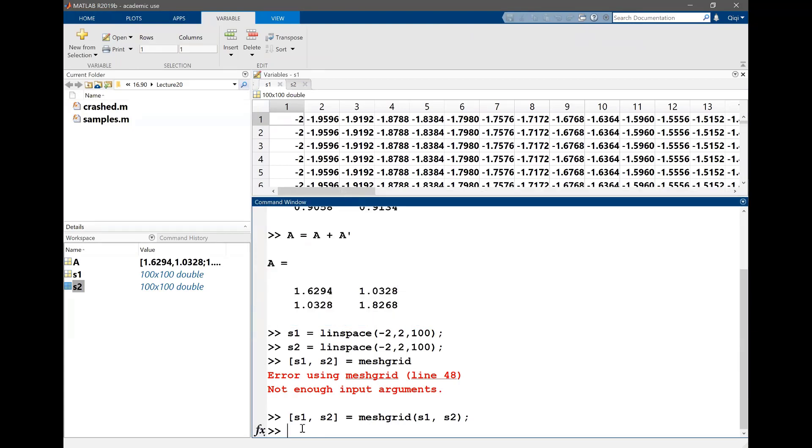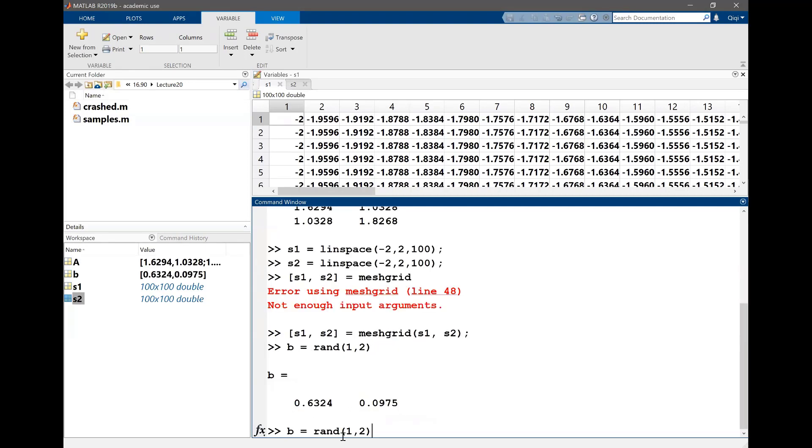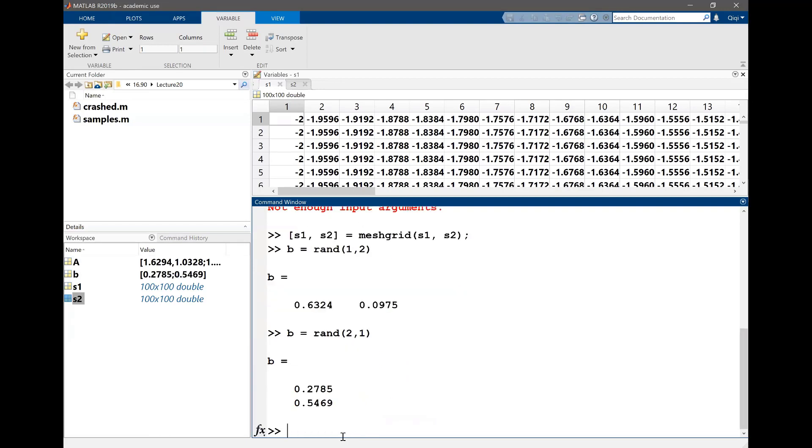So basically what we want to do is we want to compute the contour of the quadratic. So for this we also have to have a B. B is rand 2, 1, so that's going to give us a column vector. And C is equal to rand. So that's going to give us the constant term. Let's draw a contour of this.